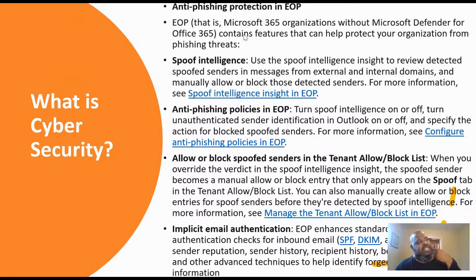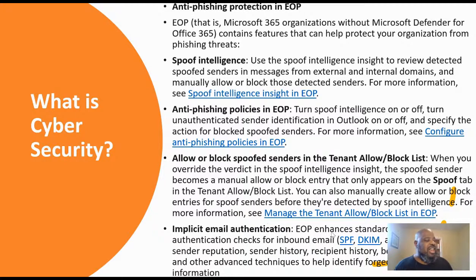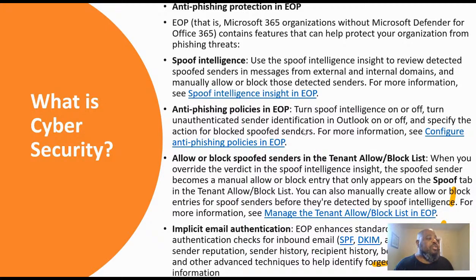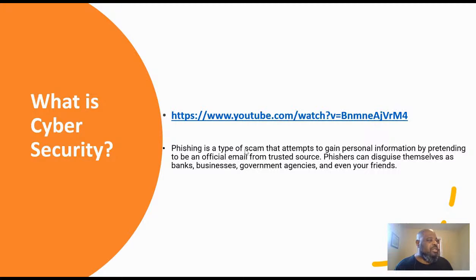Also part of the anti-phishing for Office 365 is called EOP — part of Microsoft Defender. You get spoof intelligence, anti-phishing policies, allow or block spoof senders in the tenant allow/block list, and implicit email authentication. There are ways for emails to get authenticated by Office 365. I just want to mention these at a high level because there are billions of phishing emails going around, and companies do an excellent job of it. Once again, phishing is a scam to gain personal information.